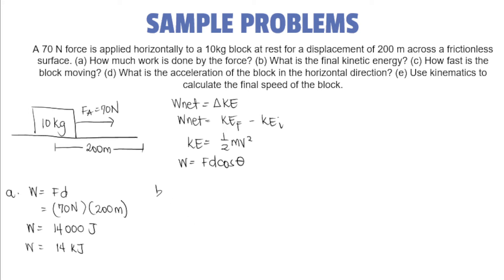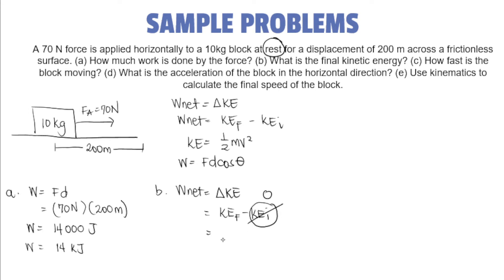Next, we proceed to letter B. We are finding the final kinetic energy. So we can use delta KE, which is KE final minus KE initial. Since the problem states the block is at rest, the initial kinetic energy would be equal to zero. So the net work is equal to 14,000 joules. Substituting, the final kinetic energy is simply equal to 14,000 joules.